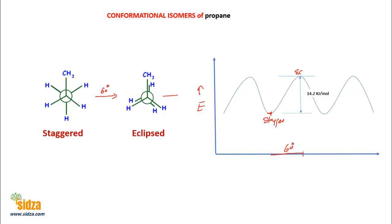A further rotation of 60 degrees gets you back to staggered. So a 120-degree rotation of a staggered conformation again produces a staggered conformation, while a 60-degree rotation converts staggered to eclipsed. Similarly, a 120-degree rotation of an eclipsed conformation again gives eclipsed. These are the two conformational isomers of propane.